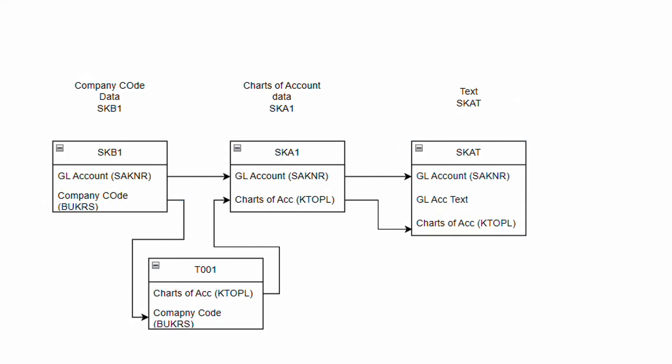Every time we want to see the entire GL master from the table, we no longer need to download dumps from SKB1, SKA1, SKAT, and T001 or do any VLOOKUP in Excel. This is a one-time setup, and every time you can reuse the same join in SE16H whenever you go to the base table.